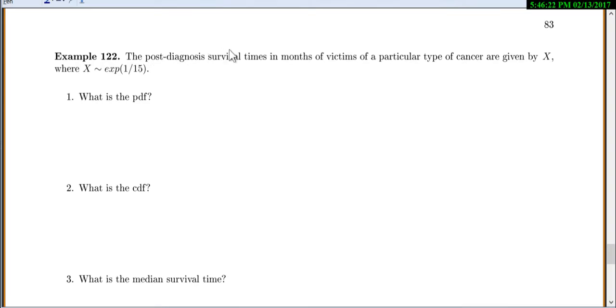So here's our example. The post-diagnosis survival times in months for victims of a particular type of cancer are given by x, and x has an exponential distribution for 1 over 15, and that means that lambda equals 1 over 15, and it is exponential. So first, what would your PDF be? So little f of x, our formula on the previous page is just lambda e to the negative lambda x. And all we have to do is plug in lambda, so we'll do 1 over 15, e to the negative 1 over 15 times x. And it's always for x greater than or equal to 0.